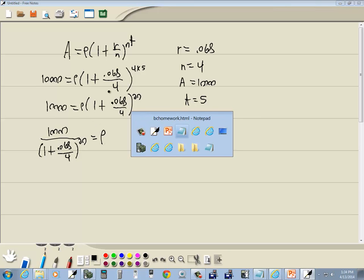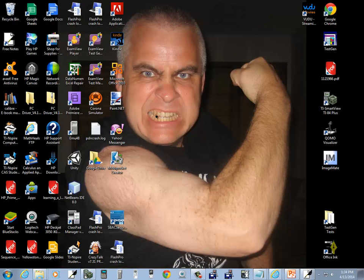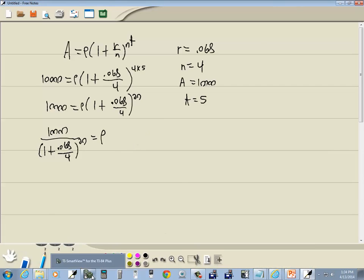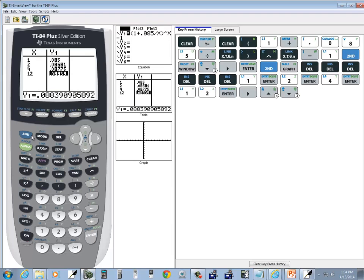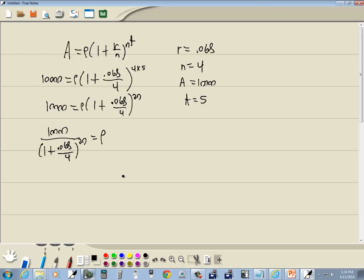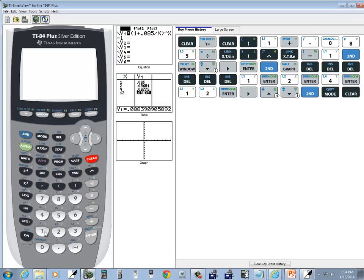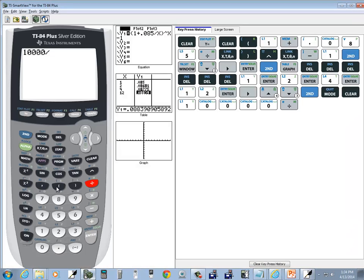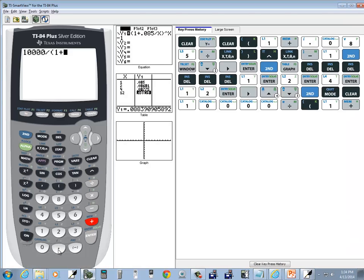Let's plug this in our calculator. And I'll get there eventually. There. Here. Second mode, exit out. Press clear. 10,000 divided by.